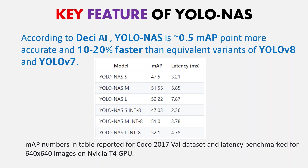YOLO NAS comes with 6 different models. YOLO NAS S is the smallest but less accurate than other YOLO NAS models, while YOLO NAS L, the last in the table, is the most accurate but less fast. YOLO NAS S is the fastest model, with a mean average precision of 47.5% and a latency of 3.21 milliseconds. YOLO NAS L INT8 is the most accurate.